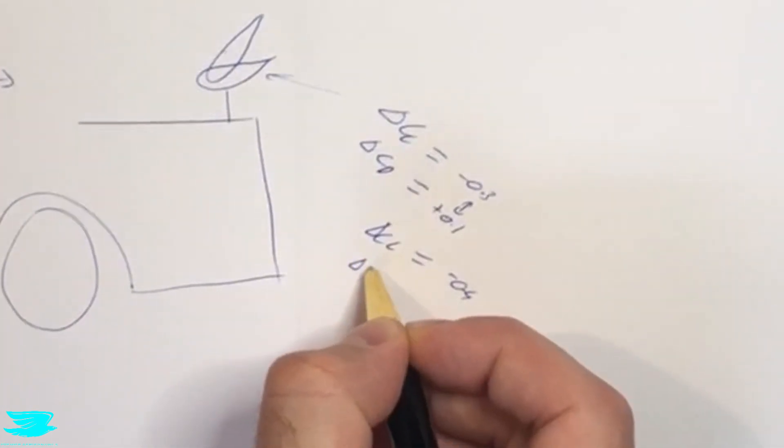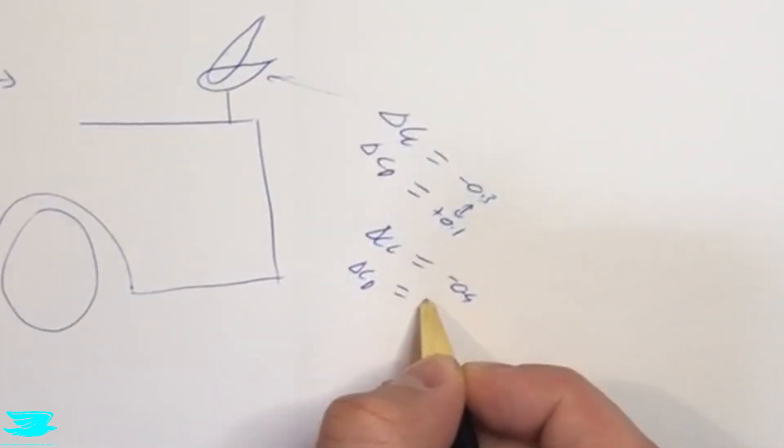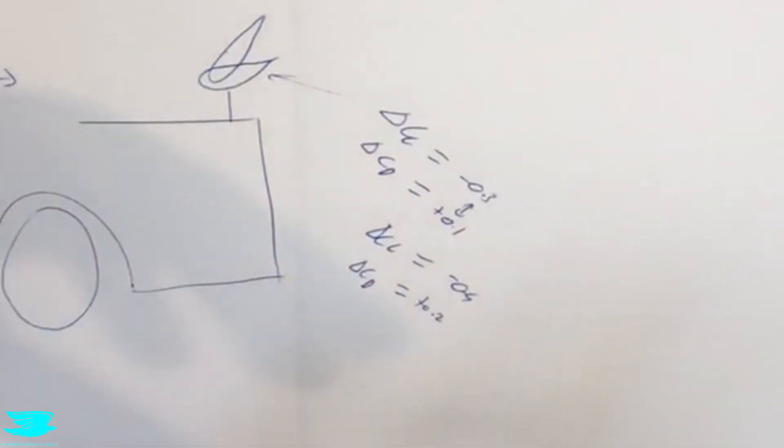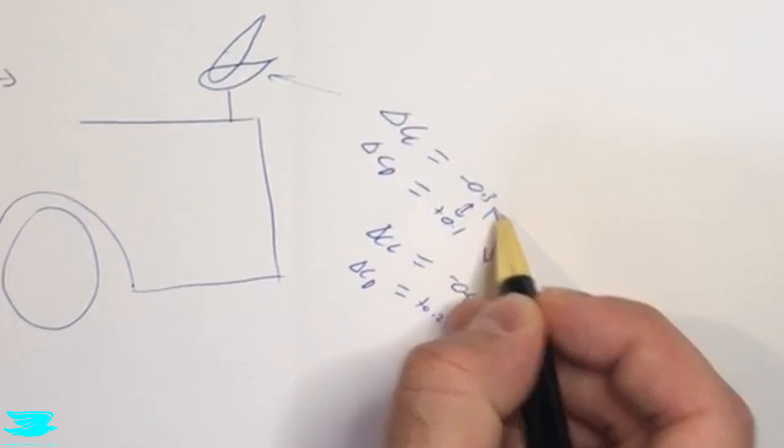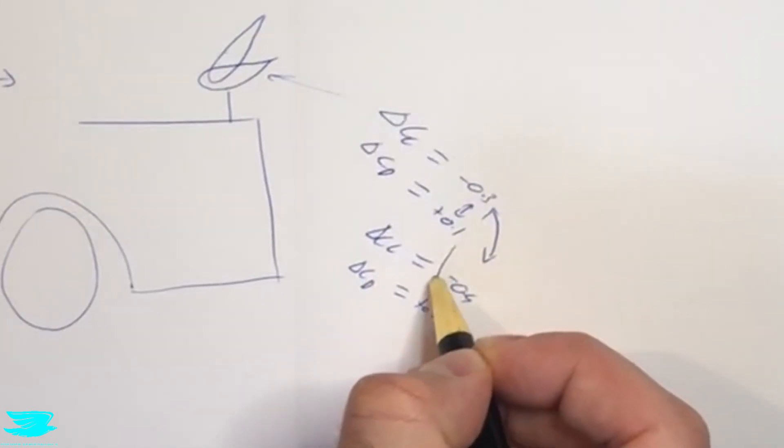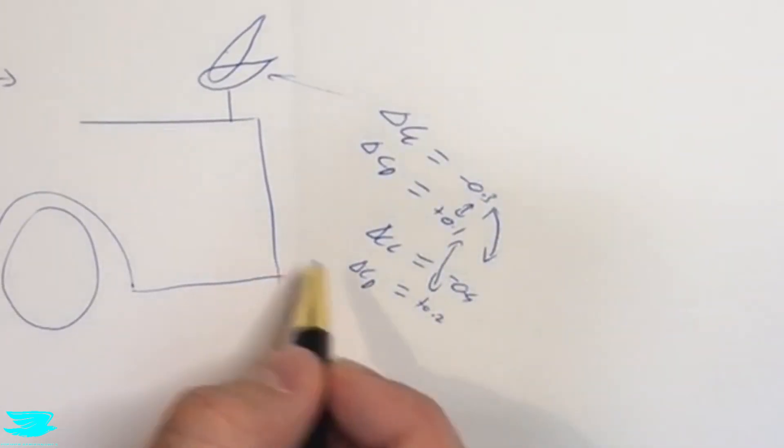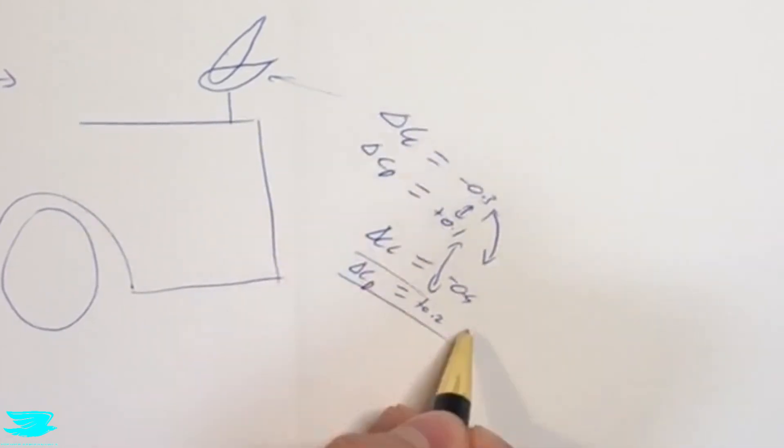And that comes with a drag penalty of about plus 0.2. So about 200 count increase in the drag over having no wing. So you can see here that the downforce is greater and the drag is greater a little bit. So in terms of the airbrake, this has been a success.